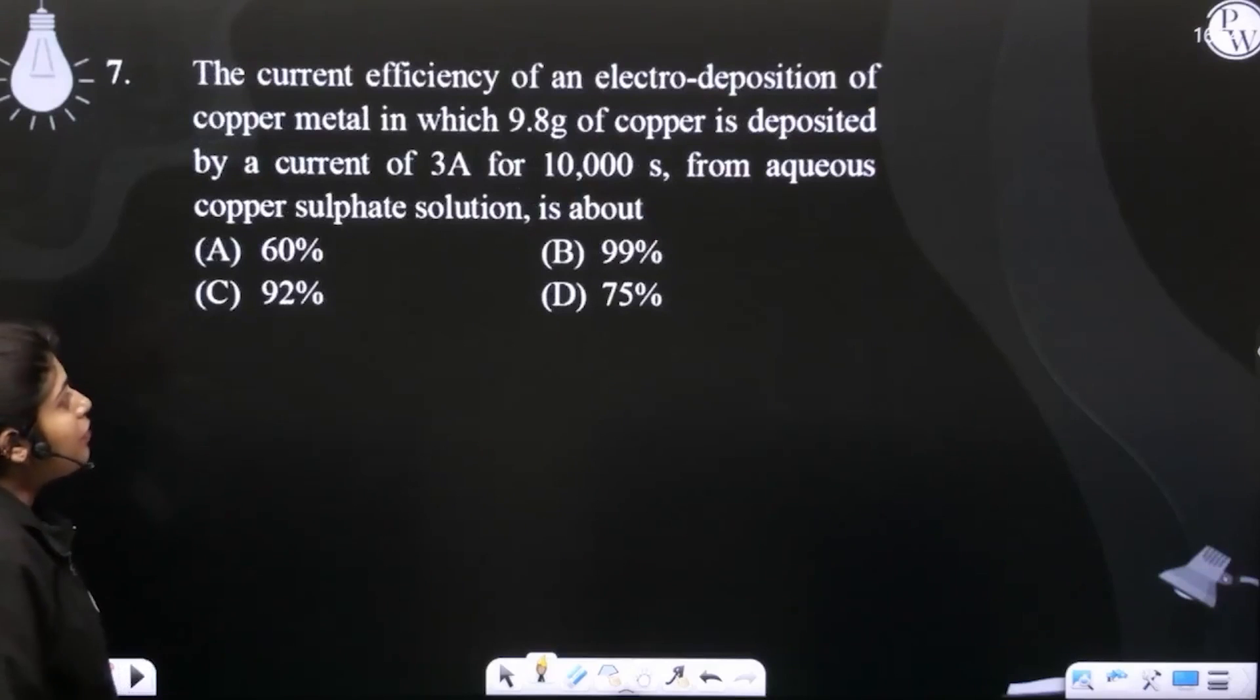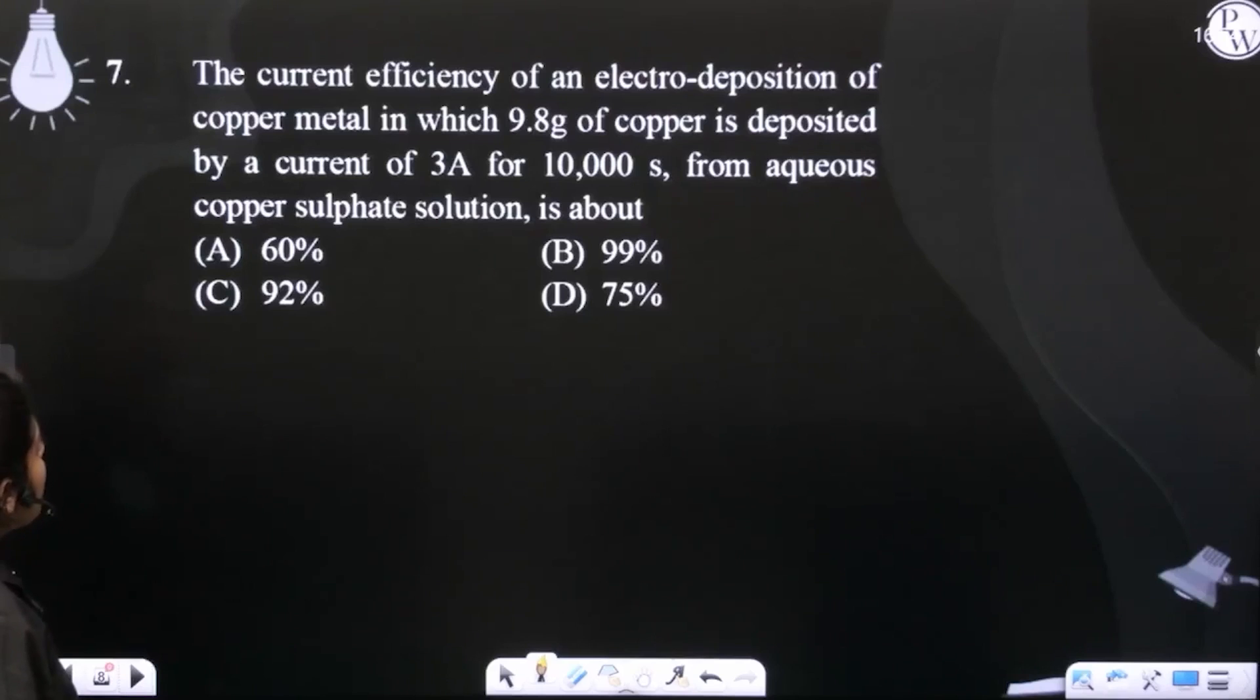Next question. The current efficiency of an electro-deposition of copper metal in which 9.8 grams of copper is deposited by a current of 3 amperes for 10,000 seconds from aqueous copper sulphate solution is about.